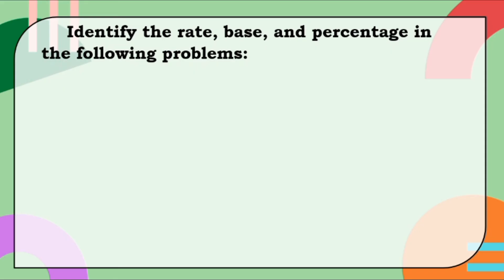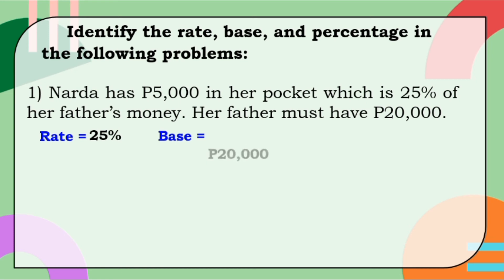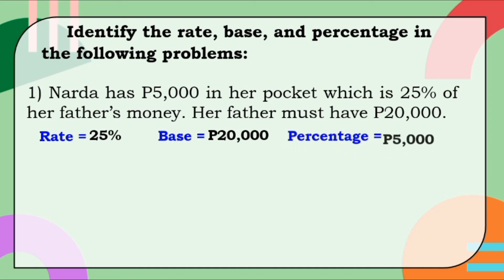Identify the rate, base, and percentage in the following problems. Number one: Narda has 5,000 pesos in her pocket, which is 25% of her father's money. Her father must have 20,000 pesos. Rate is 25% because of the percent sign. Base is 20,000 because it is the total amount of Narda's father's money. And percentage is 5,000 — yan naman yung nasa pocket ni Narda.